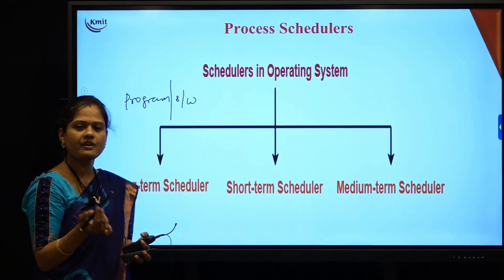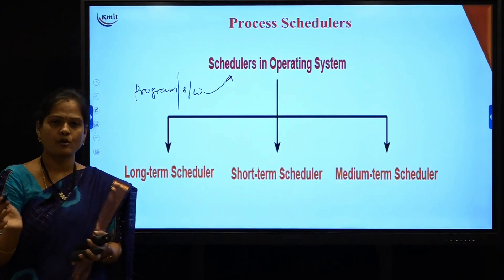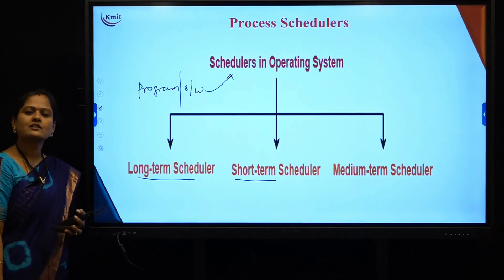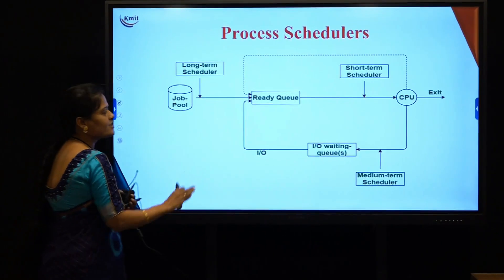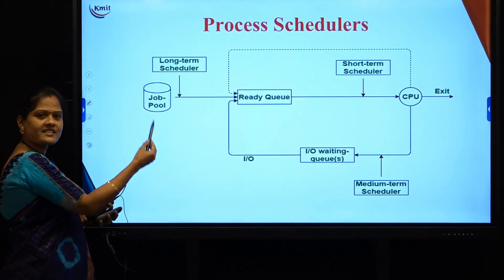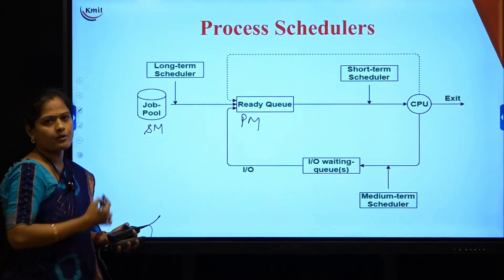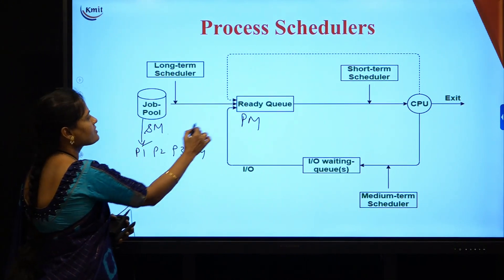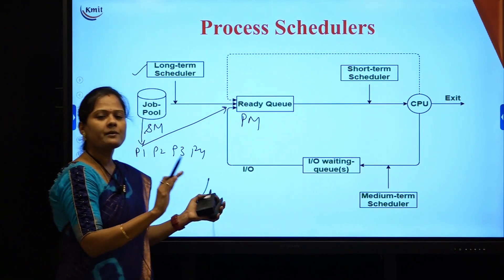The software that takes care of moving a process from one queue to another is called a scheduler. There are three types of schedulers in an operating system: long-term, short-term, and medium-term. The job queue is in secondary memory and the ready queue is in primary memory. The long-term scheduler selects a process from the job queue pool and moves it into the ready queue.